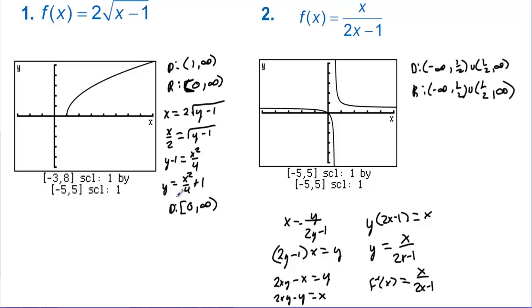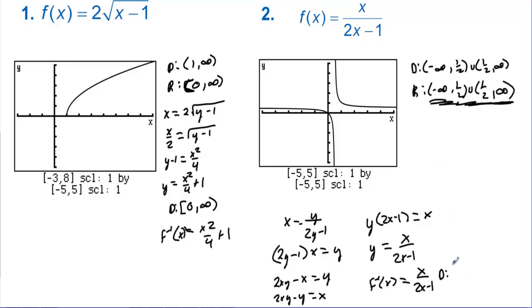Going back to correct example one: f-inverse of x equals x squared over 4 plus 1. For example two, since it is its own inverse, the domain inherits the range of the original function, which is negative infinity to one-half, union with one-half to infinity.